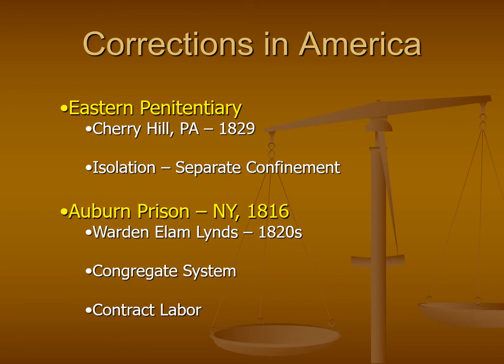So whereas Auburn had this congregate system of working together during the day and isolation at night, Eastern still stuck with that idea of isolation 24 hours a day. During the first couple decades of Eastern Penitentiary, even though inmates were expected to work during the day, oftentimes they were expected to work in their cells — they didn't even want inmates to be around each other. Eastern was isolation 24/7, whereas Auburn was work in silence in a congregate fashion during the day, then isolated at night.